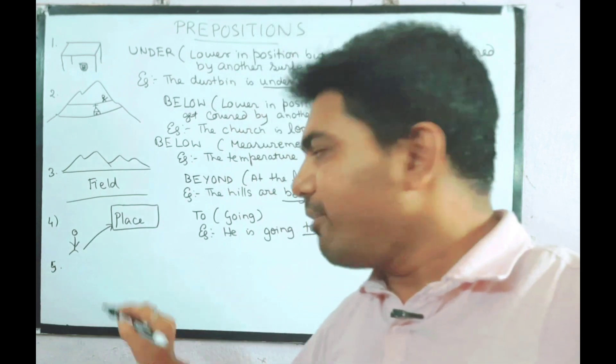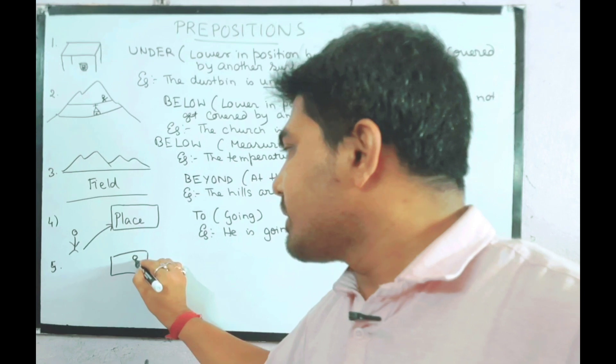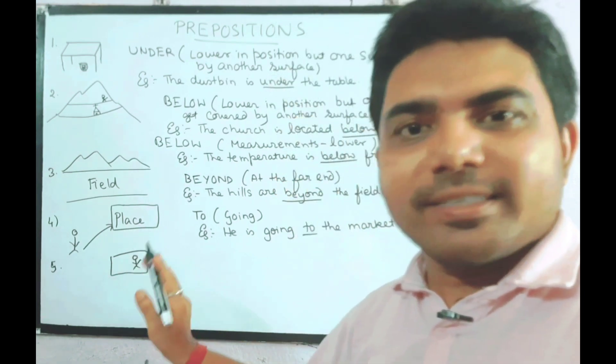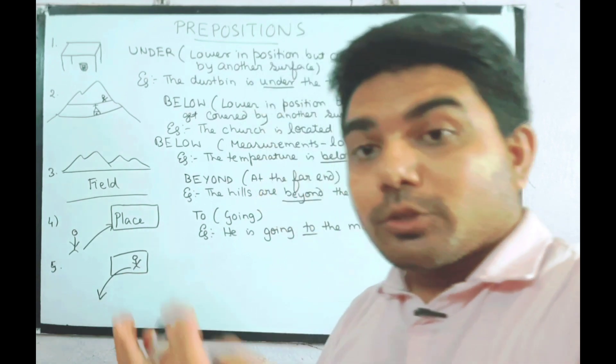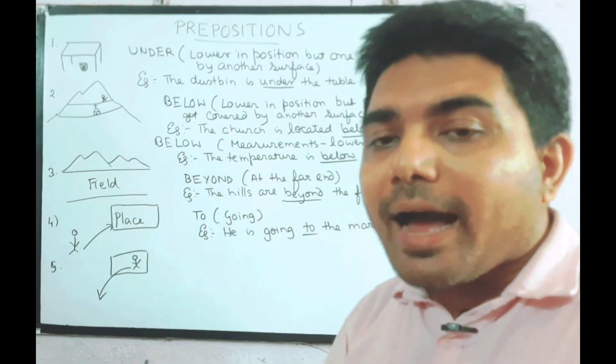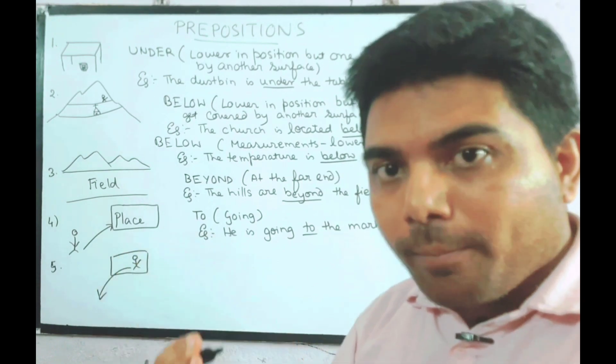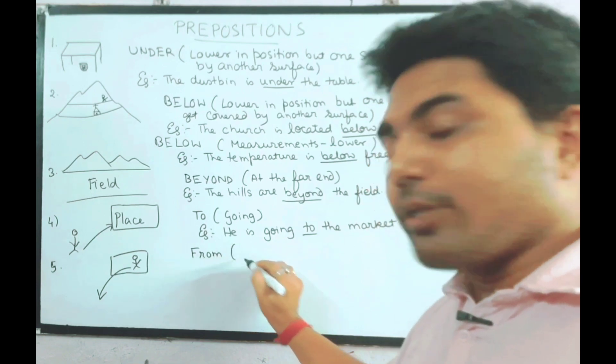Number five. Now suppose this is a place, someone stays in this particular place, he is coming from London. So 'from' denotes coming from a place.